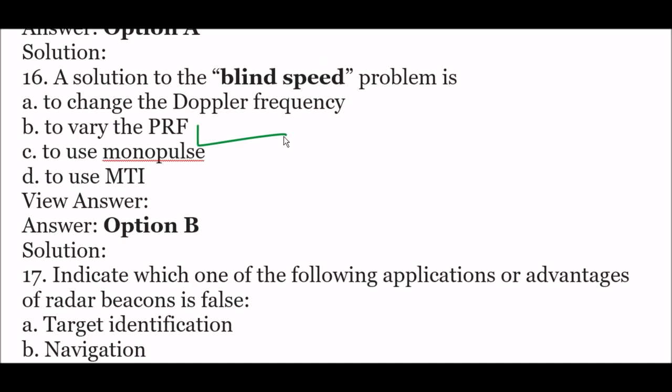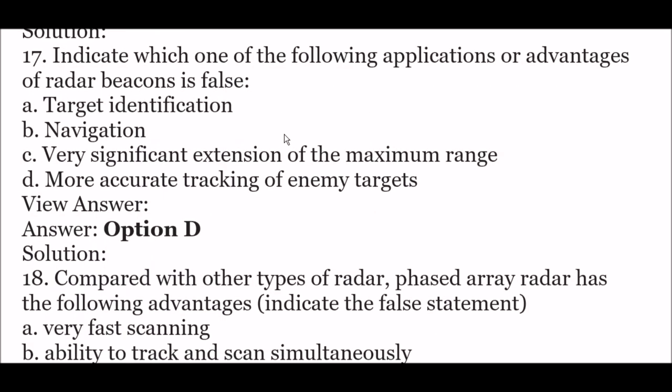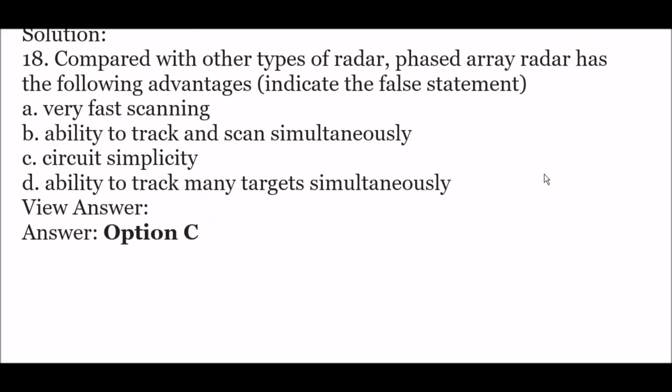Next question: indicate which one of the following is an application or advantage of radar that is false — option A: target identification, option B: navigation, option C: very significant extension of the maximum range, option D: more accurate tracking of enemy targets. The right answer is option D — more accurate tracking of enemy targets.